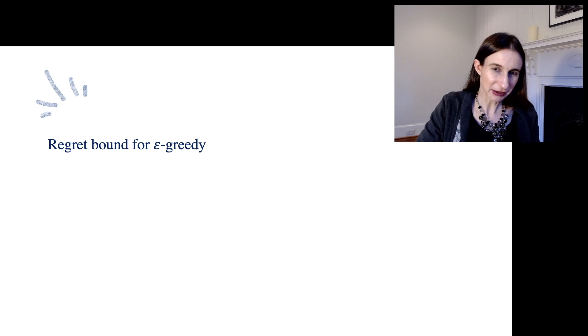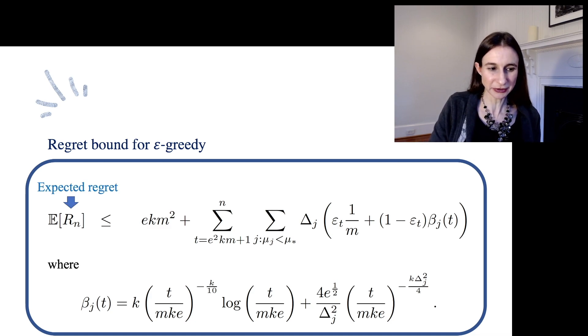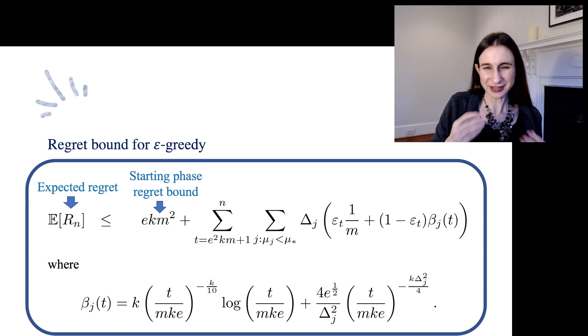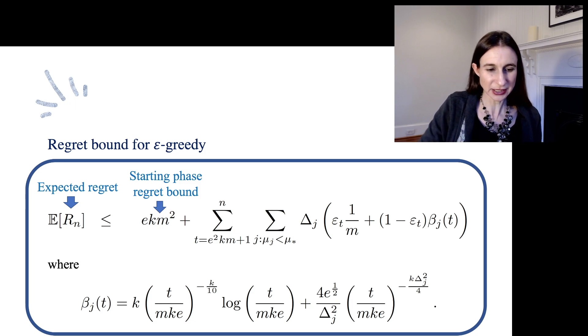This is the main regret bound for the epsilon greedy algorithm, and we'll go through it in detail. It's a bit intimidating. We want to bound the expected regret of the epsilon greedy algorithm, and the first term is actually something you can kind of ignore, because it's just the regret bound for the starting phase when you just draw all of the arms once, and that's not going to be the major contributor to the regret bound, so let's ignore that term.